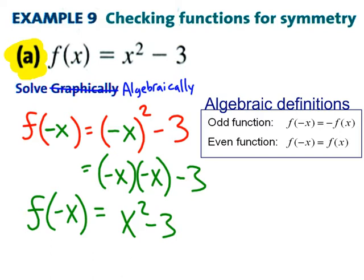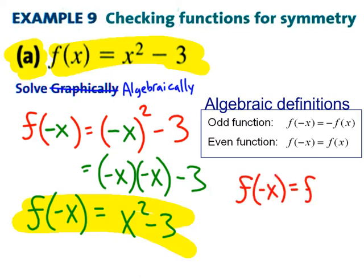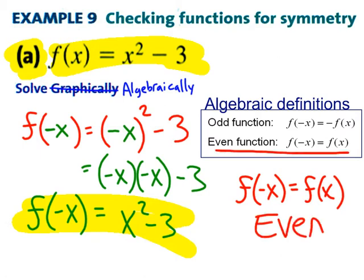And again, that's what f of negative x equals, now that I've simplified it. And let me ask you to compare. How does f of negative x compare with f of x? Well, they're exactly the same thing, aren't they? So, we can now say f of negative x is exactly the same thing as f of x, and therefore the graph is even.